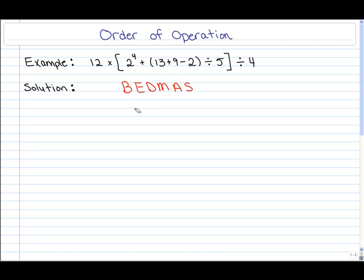So go ahead and try this example. Remember that brackets go first, then exponents. You can interchange division and multiplication, and then you can interchange addition and subtraction. But try to follow the order of BEDMAS and evaluate this problem.